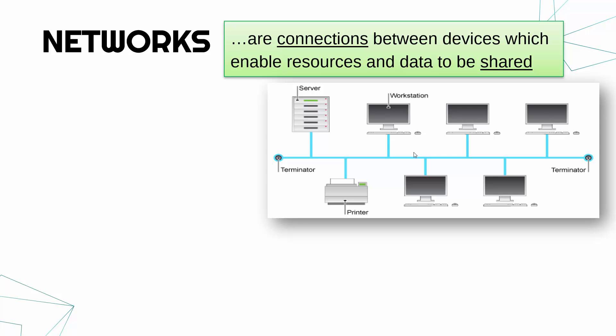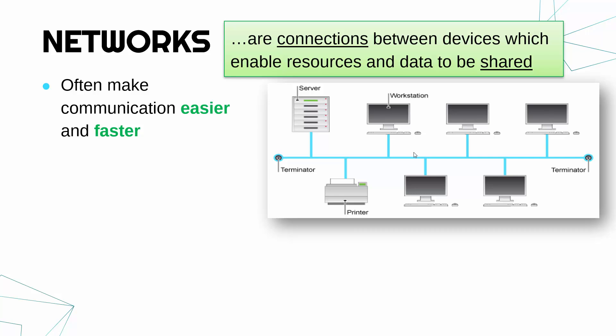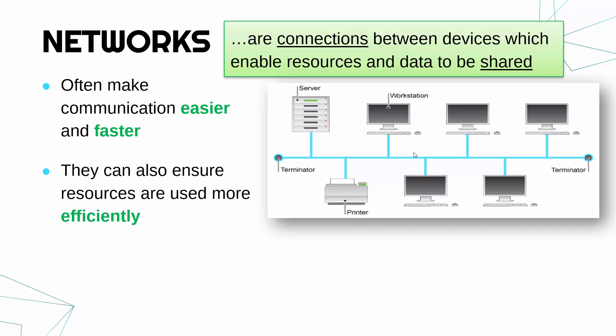The idea is that a network is there because communication is much faster and easier when we use a network. Before networks were invented, to send information long distance you'd have to use letters and physical messengers and slower methods than just sending an email or using the internet. Even in a building, being able to email someone or send a quick message is often quicker than walking down to see them. Also, that point about resources and data being shared often leads to a more efficient use of resources.